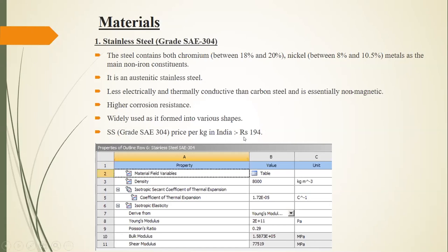The cost of stainless steel SAE 304 is approximately 194 rupees per kg in India, which is also a consideration for manufacturing the axle. Its material properties are: density 8000 kg/m³, Young's modulus 2×10¹¹ Pa, and Poisson's ratio 0.2.